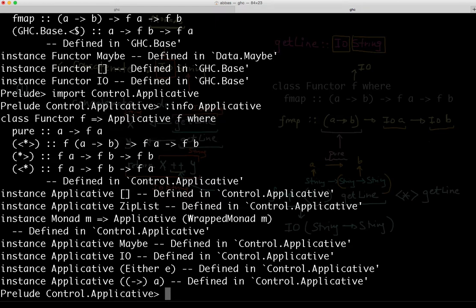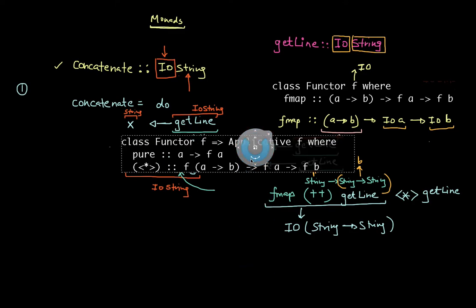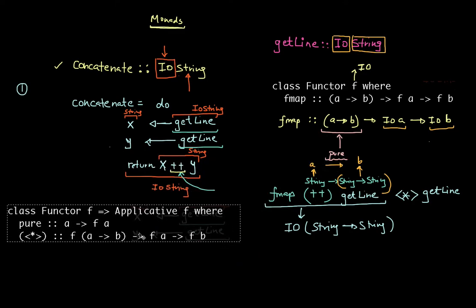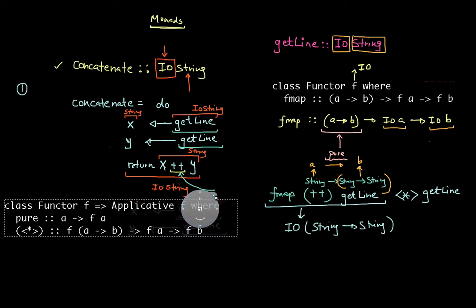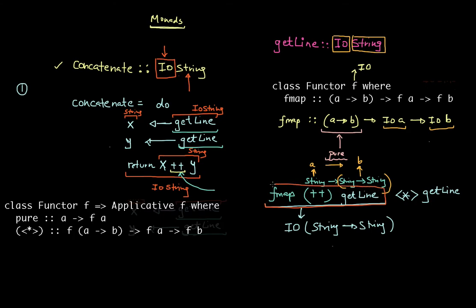Let's move back to our blackboard and paste this here so we can start using this idea to see how it's going to help us complete this problem. In the last video, we stopped at the point where I knew that the type of using fmap — the entire orange box — had a type of IO of (String → String). I had a function that would take in a string and give back a string, completely wrapped in the IO module.